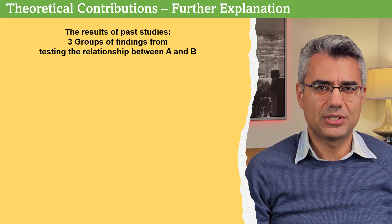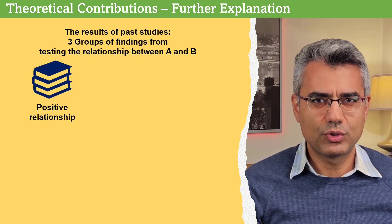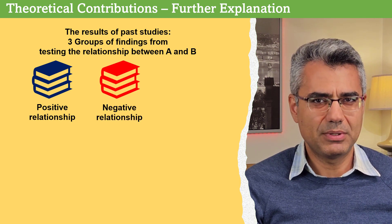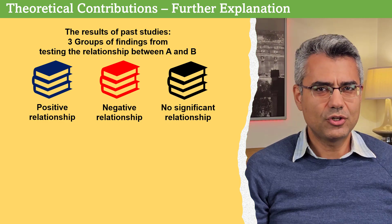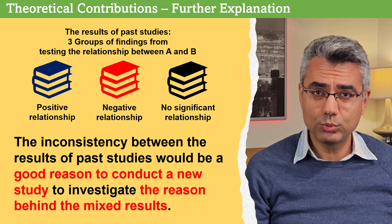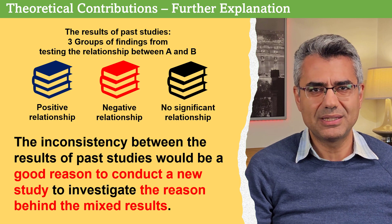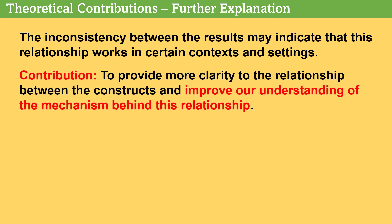Another approach — which is my favorite — is referring to the contradictory results of past studies. For example, some studies may have reported a positive relationship between A and B, some may have found a negative relationship, and others may have found no significant relationship. The inconsistency between the results of past studies might be a very good reason to replicate a study in a new context to understand the reason behind the mixed results. Indeed, this inconsistency may indicate the relationship works only in certain contexts and settings.